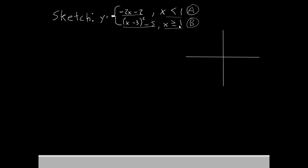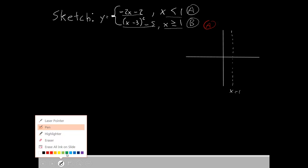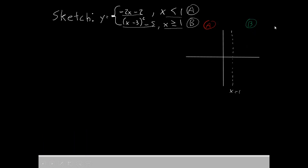The first thing we should do is go onto our graph and label that changeover point x equals 1. Go ahead and draw a dotted line there — that's x equals 1. If we are less than x equals 1, that puts us in section a. But if we are greater than x equals 1, that puts us in section b. In piece a, the first function is true, and in piece b, the second function is true. At x equals 1, we'll have a changeover between the functions.